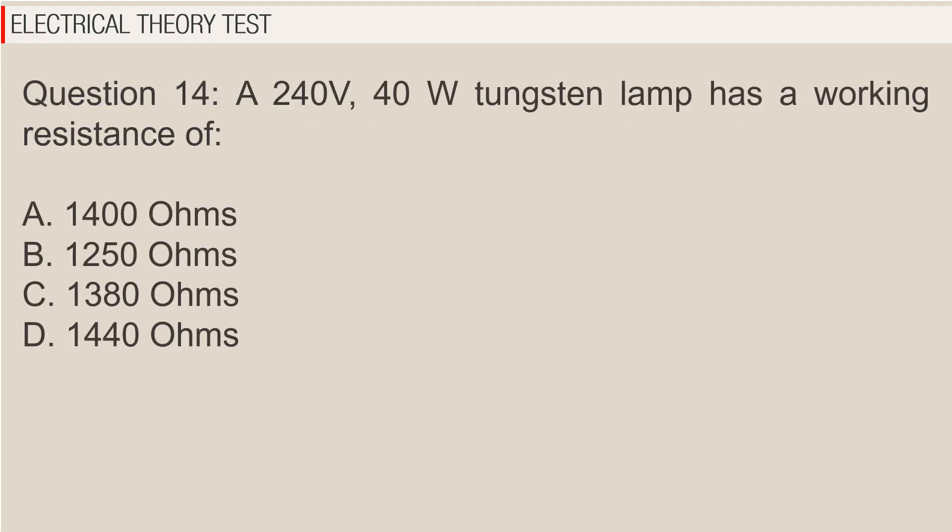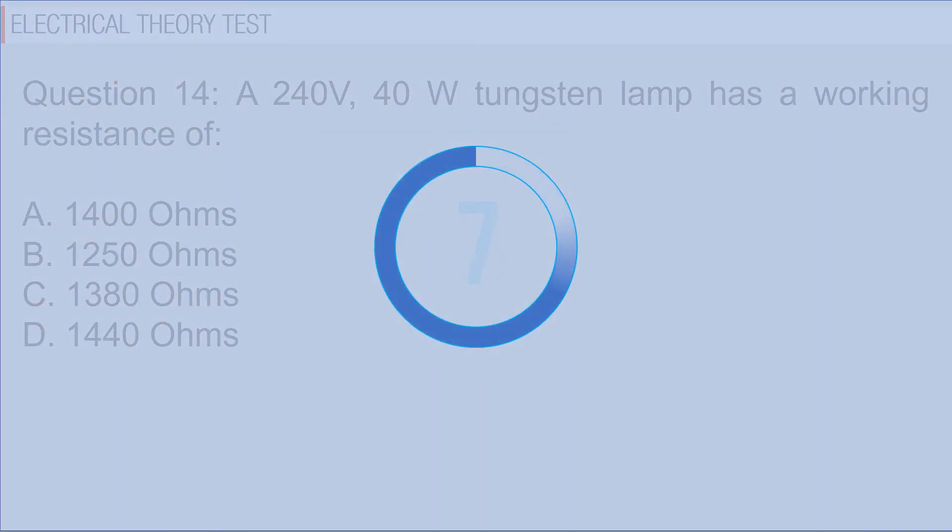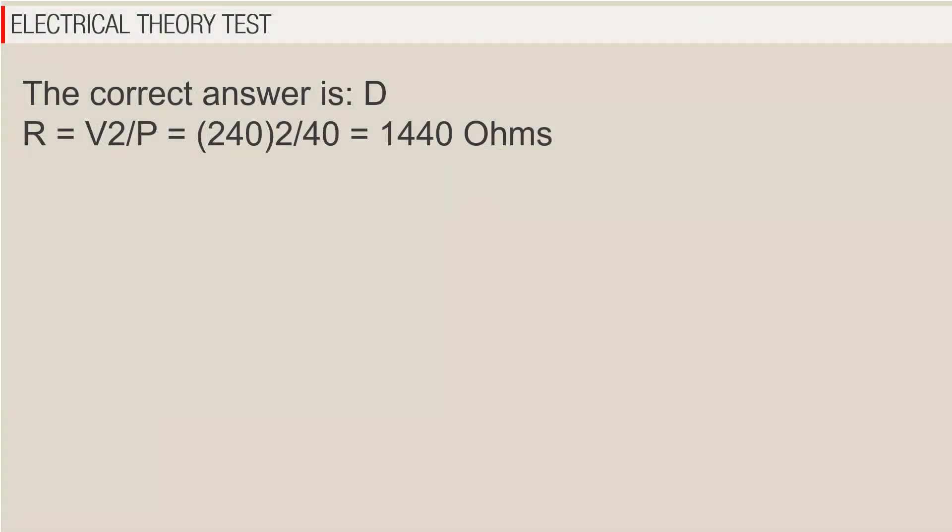Question 14: A 240 volts, 40 watt tungsten lamp has a working resistance of A. 1,400 ohms, B. 1,250 ohms, C. 1,380 ohms, D. 1,440 ohms. The correct answer is D. R equals V squared over P equals 240 squared over 40 equals 1440 ohms.